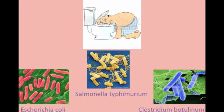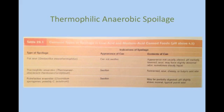Clostridium botulinum is a bacteria that can find its way into spoiled canned foods. If ingested, this bacteria can cause botulism, which is an extremely harmful disease that can cause weakness, double vision, and muscle paralysis. A type of spoilage is thermophilic anaerobic spoilage, which occurs if canned foods are incubated at high temperatures — there is a chance for thermophilic bacteria that survive to germinate and cause more trouble. This is a common cause of spoilage in low-acid canned foods at the commercial level.